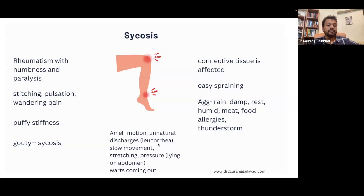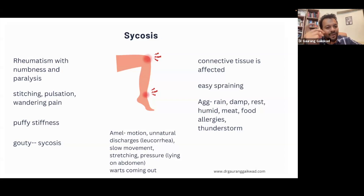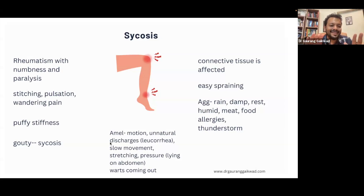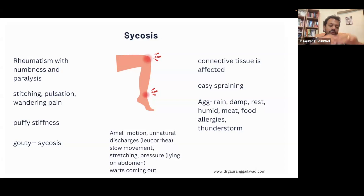Sycosis is always better by unnatural discharges — like leucorrhoea ameliorates. One of the remedies is Murex, a Sycotic remedy. Better by slow movement — I feel better by walking slowly. Pulsatilla: Sycotic miasm. There are so many more things; I am just giving you a brief about these things, orienting you towards a structured way of thinking.